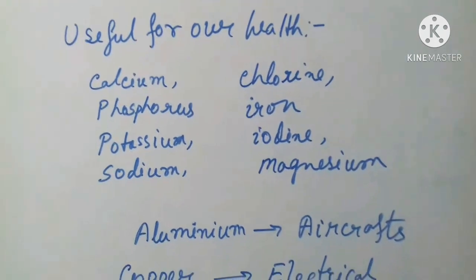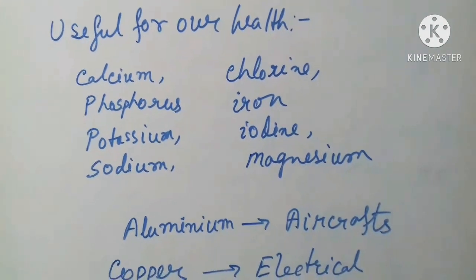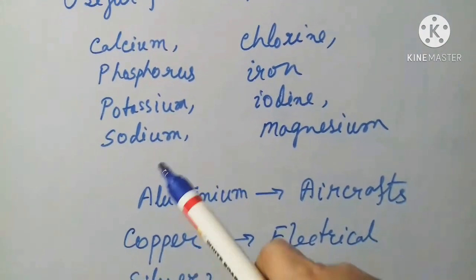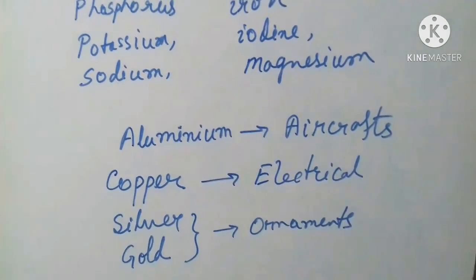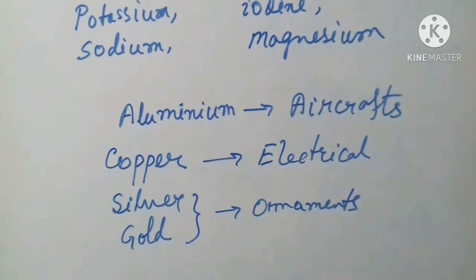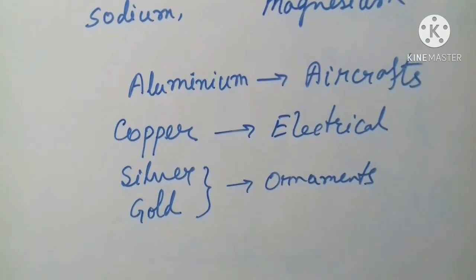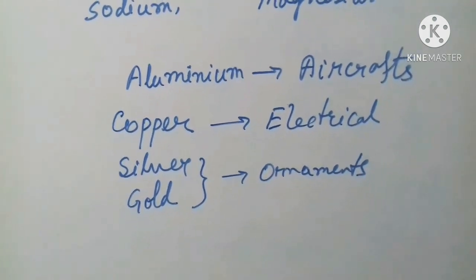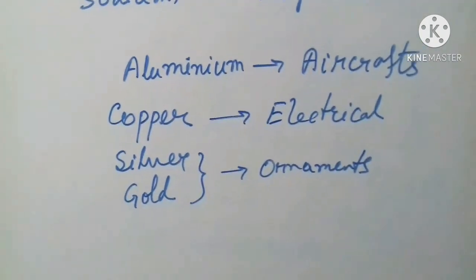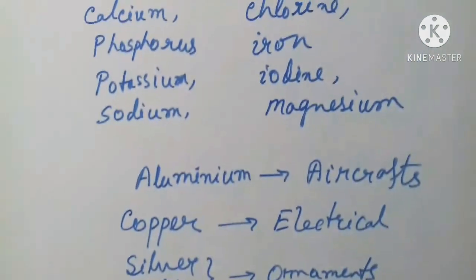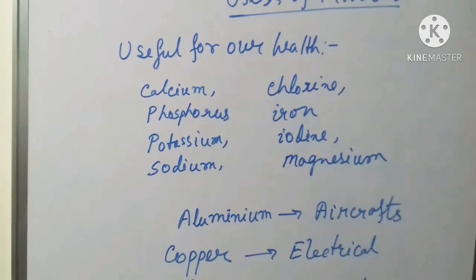Iron has multipurpose uses — as steel it is used for making buildings, bridges, and vehicles. Aluminum is used for aircraft, and copper is very essential for electrical appliances. Electrical wires are made up of copper, which is a very good conductor of electricity. Silver and gold are minerals used for making ornaments, and many more uses exist.